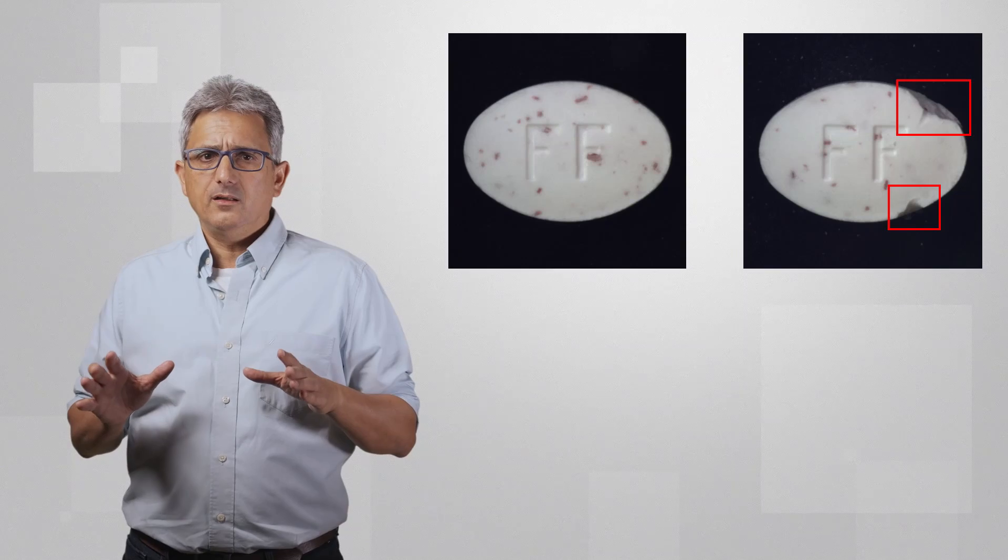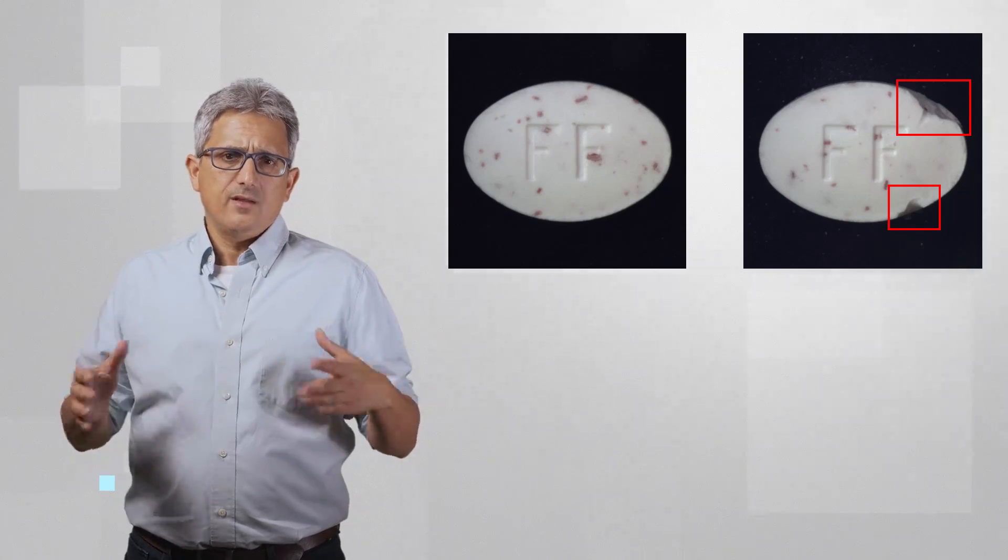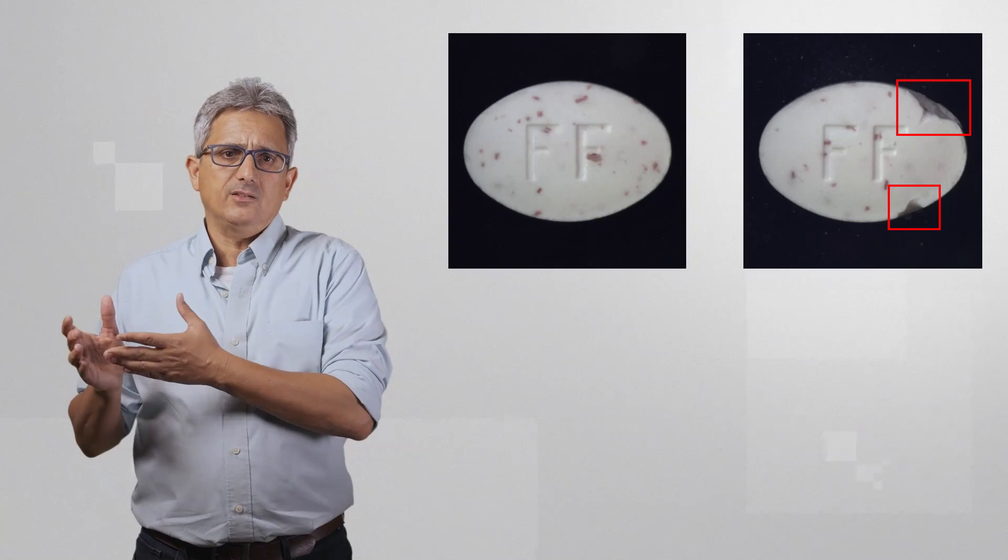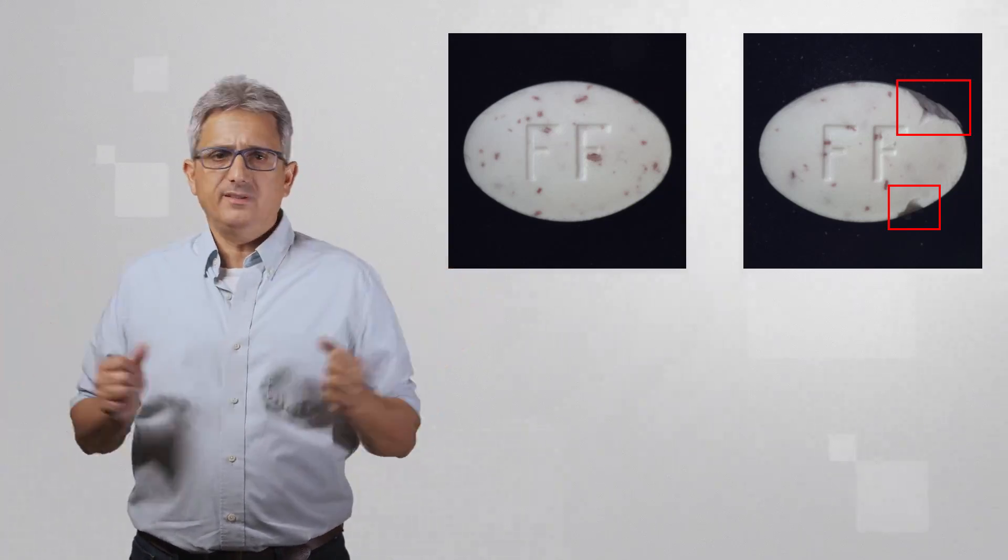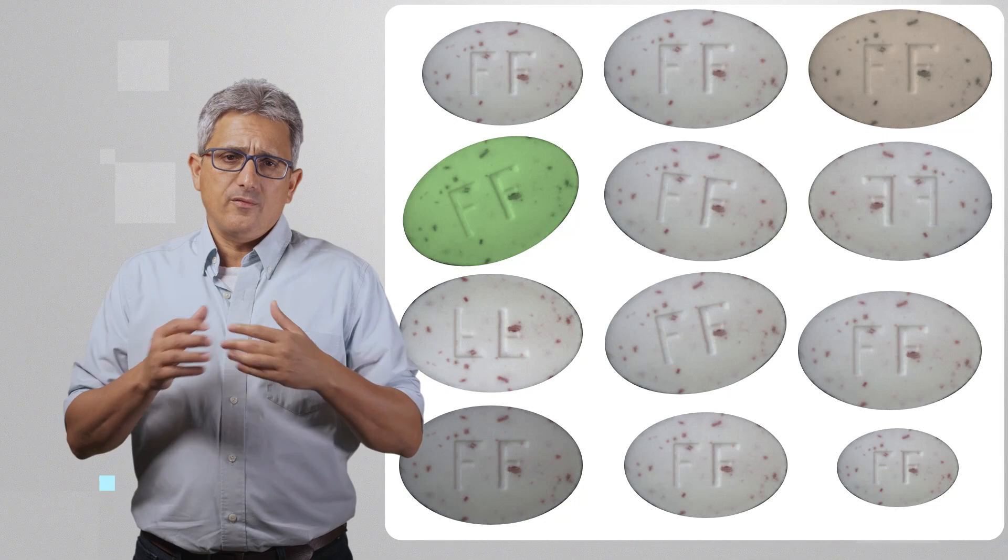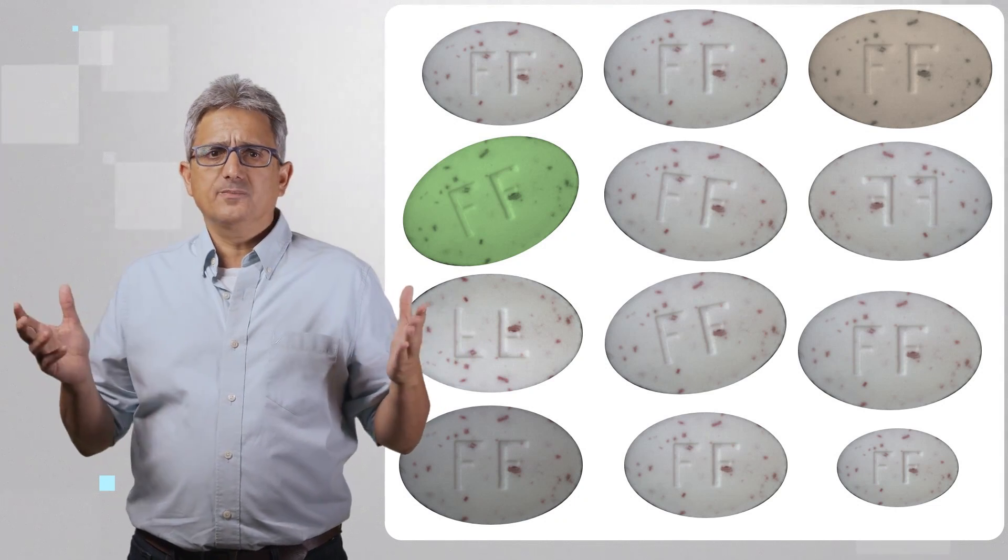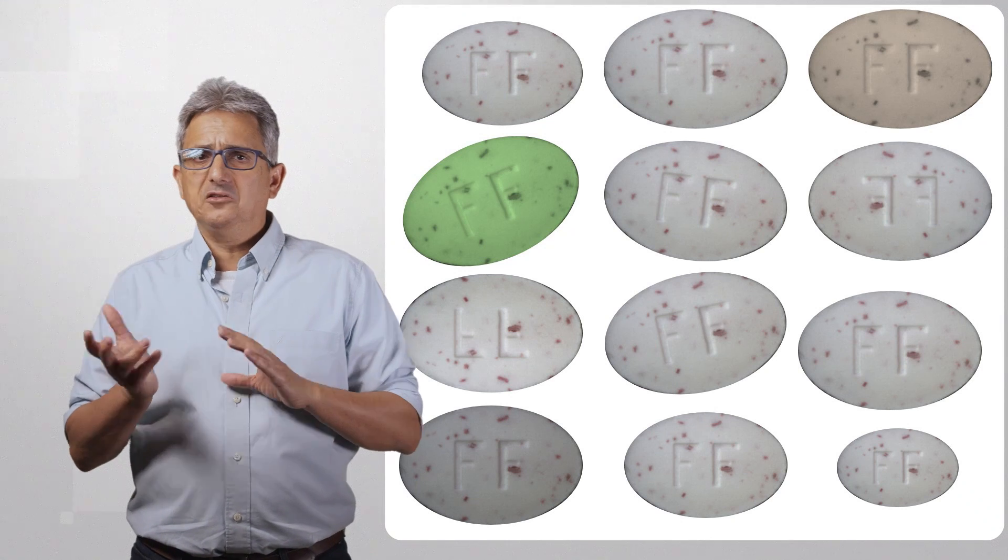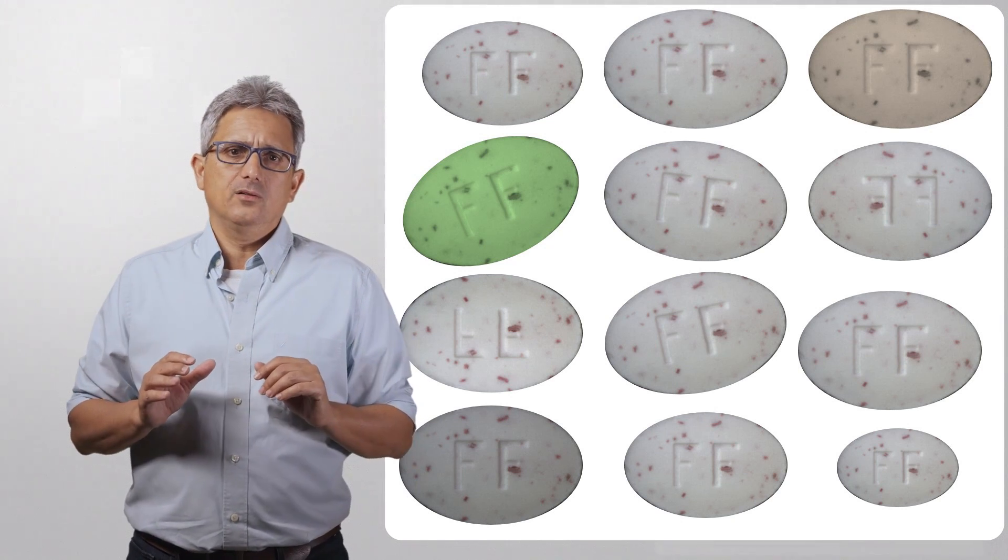So it all starts with the data. You can easily detect that this pill is good, and this one has a defect, but how can a computer detect it? For you, all of these pills are the same. Humans can still detect the pills if they are rotated, scaled, shifted, or of a little different color.